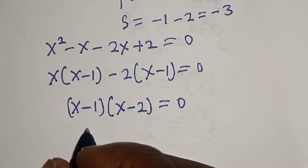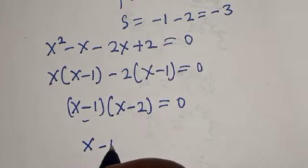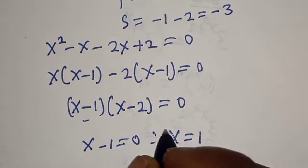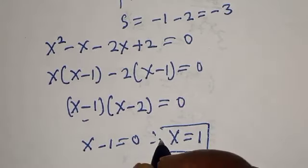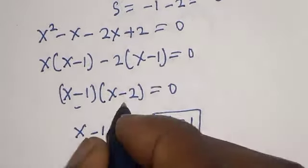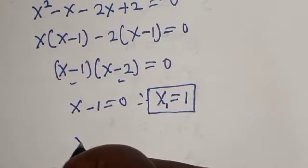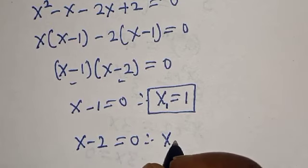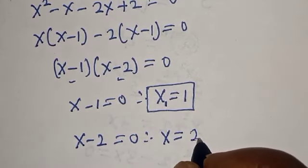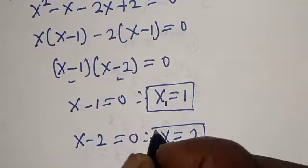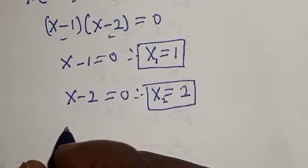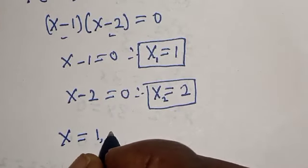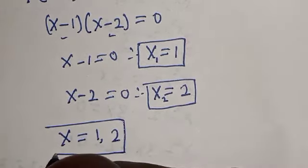From here, s minus 1 equals 0, therefore s equals 1. And s minus 2 equals 0, therefore s equals 2. That is the second value of s. Therefore our answers are s equals 1 and s equals 2. That is our final answer.